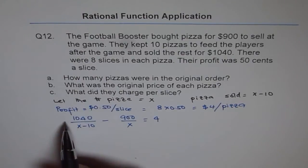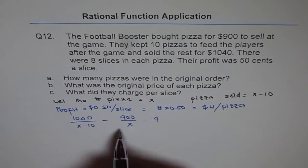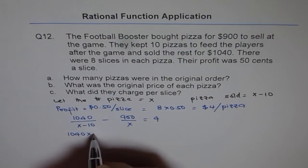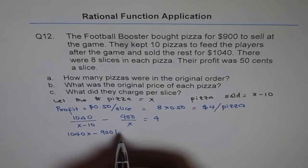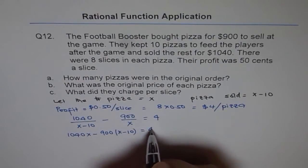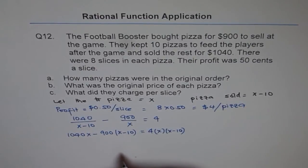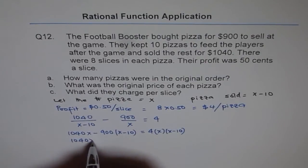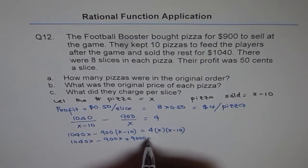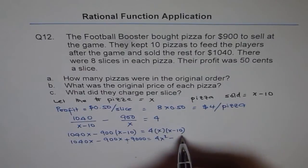Now we multiply all terms by the common denominator, which is X times (X minus 10). So we get 1040X minus 900 times (X minus 10) — it's good to write in brackets first so that the minus sign doesn't cause errors — equals 4 times X times (X minus 10). Opening the bracket: 1040X minus 900X plus 9000 equals 4X squared minus 40X. Many times I have seen a mistake right here.